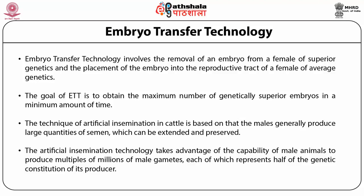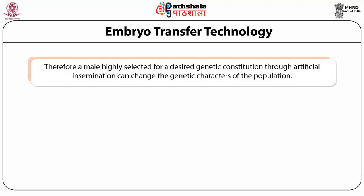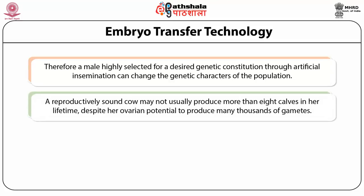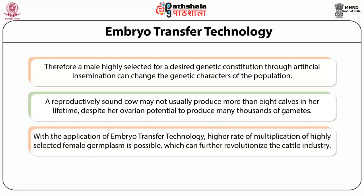Artificial insemination in cattle takes advantage of the capability of males to produce many millions of sperm that can be extended and preserved. A highly selected male, through artificial insemination, can change the genetic character of the population, as each sperm represents half of the genetic constitution of its producer. A reproductively sound cow may not usually produce more than eight calves in her lifetime despite her ovarian potential. With embryo transfer technology, a higher rate of multiplication of highly selected female germplasm is possible, which can further revolutionize the cattle industry.